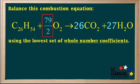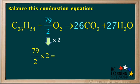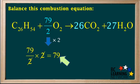However, we are asked to balance the equation using the lowest possible set of whole number coefficients. And 79 over 2 is a fraction, not a whole number. You can see that multiplying 79 over 2 times 2, and cancelling out the 2's, gives us 79, which is a whole number.